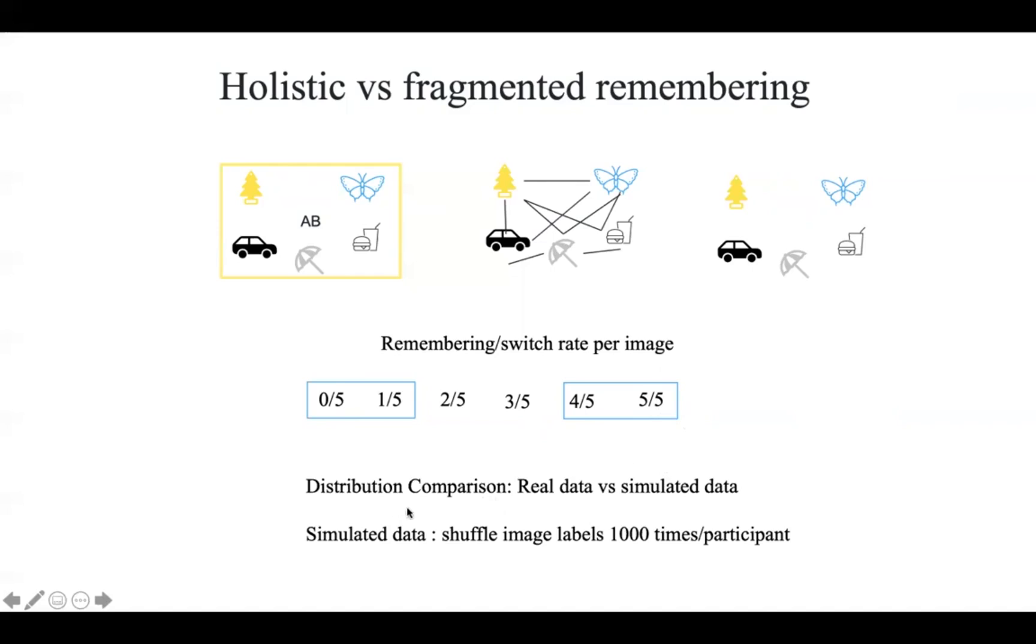In order to test our hypothesis, we actually compare the distribution of the real data and simulated data. In order to get simulated data, we shuffle the image label. For the real data, all these questions coming from the same picture. But after we do the shuffling, these detailed questions no longer come from the same picture. For each participant, we shuffle 1,000 times and then average it.